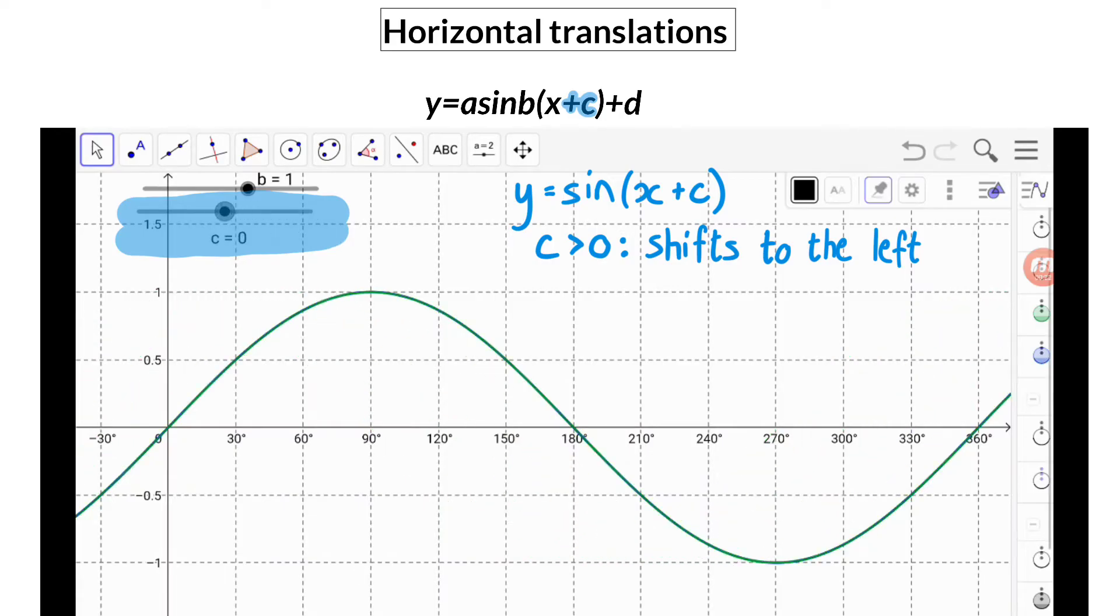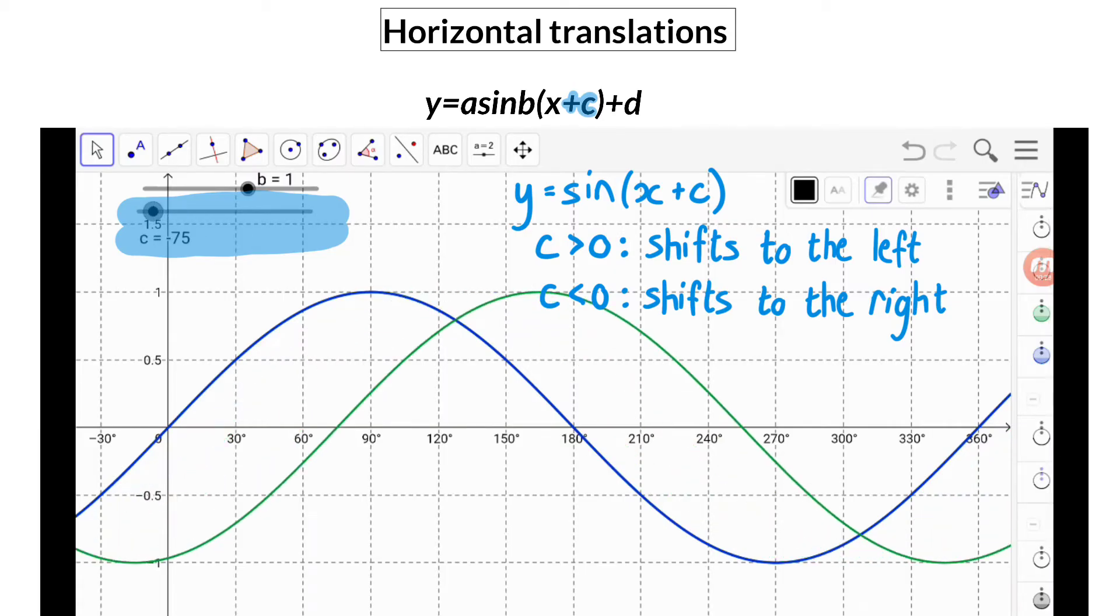When the c value becomes negative, the graph shifts to the right in the positive direction. From the sketch it is also clear that the c value does not influence the amplitude of the graph, because both graphs have an amplitude of one, and neither does it influence the period of the graph, because both graphs still take 360 degrees to complete one wavelength.